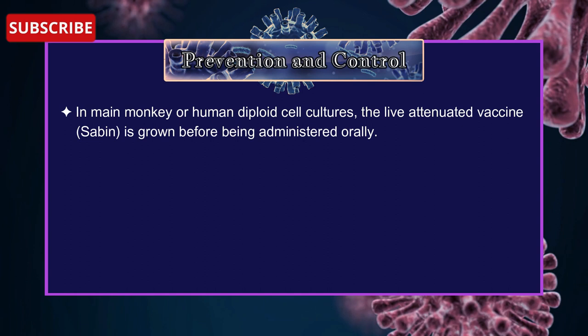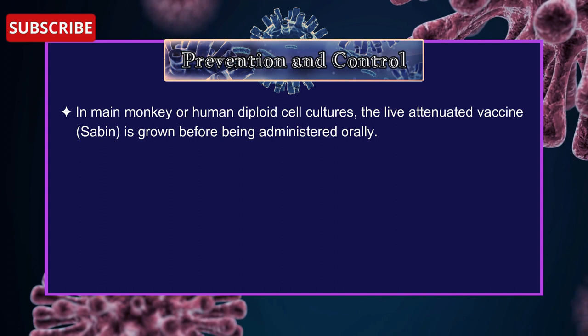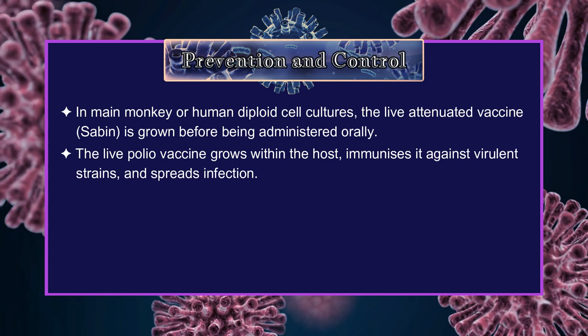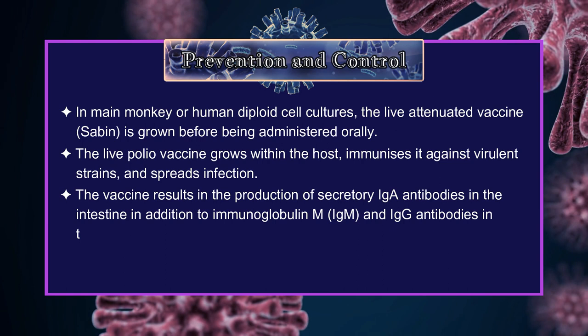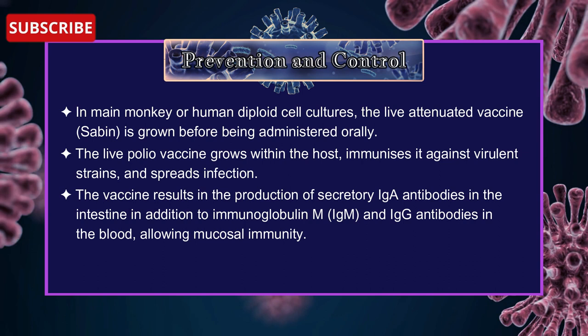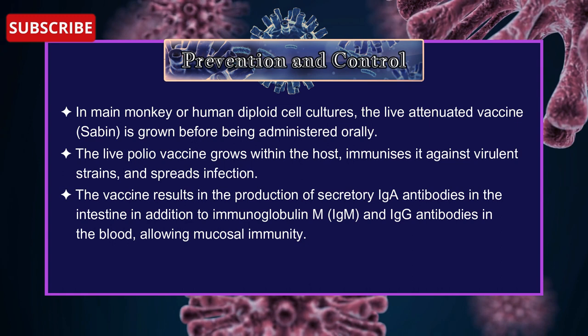The live attenuated virus is grown in monkey or human diploid cell cultures before being administered orally. The live polio vaccine grows within the host, immunizes it against viral strains, and can spread infection. The vaccine results in production of secondary IgA antibodies in the intestinal tract, in addition to IgM and IgG antibodies in the blood, allowing mucosal immunity.